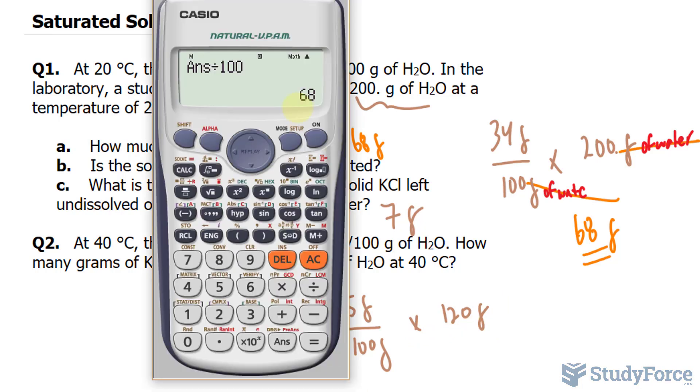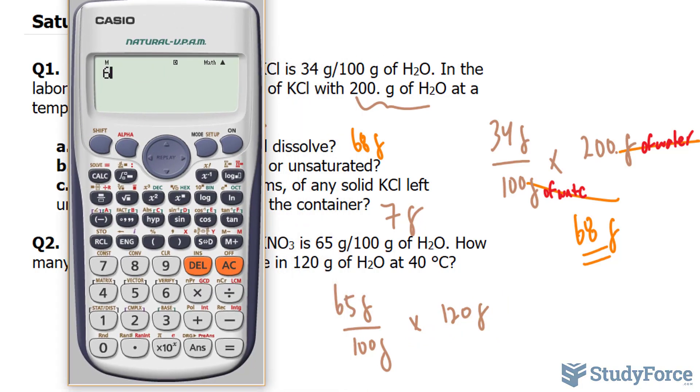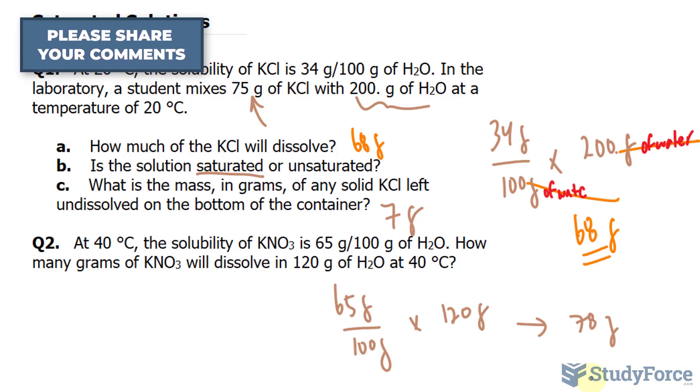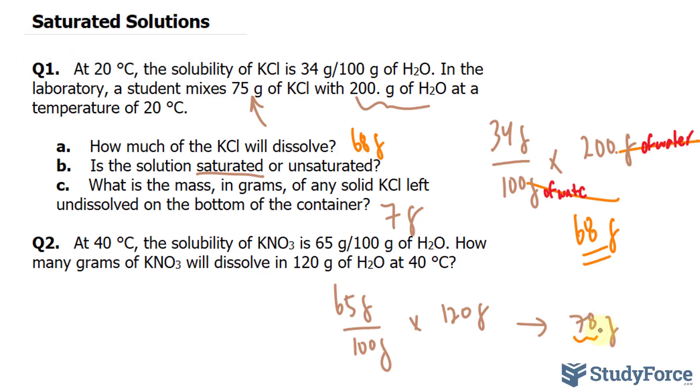And we do this calculation really quickly, 65 times 120 divided by 100 gives us 78. So 78 grams of potassium nitrate will dissolve in 120 grams of water. And that's the extent of it, and make sure that the numbers are correct to the correct number of significant figures. We have 2 here and 2 at the least here, so we're good.